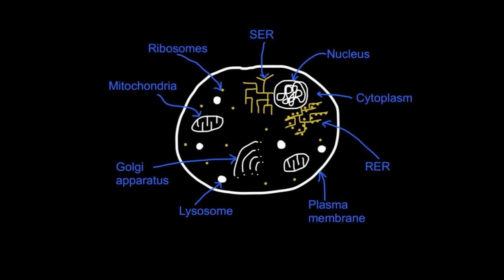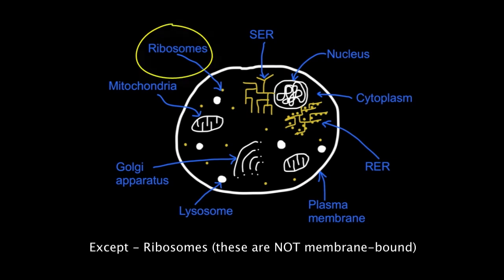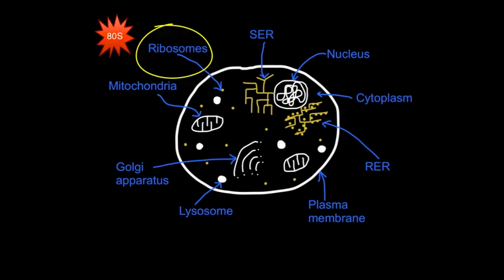The compartmentalization comes with all the other organelles, the majority of which are membrane-bound. The only exception is the ribosomes, which are 80S ribosomes as opposed to the 70S found in prokaryotic cells.